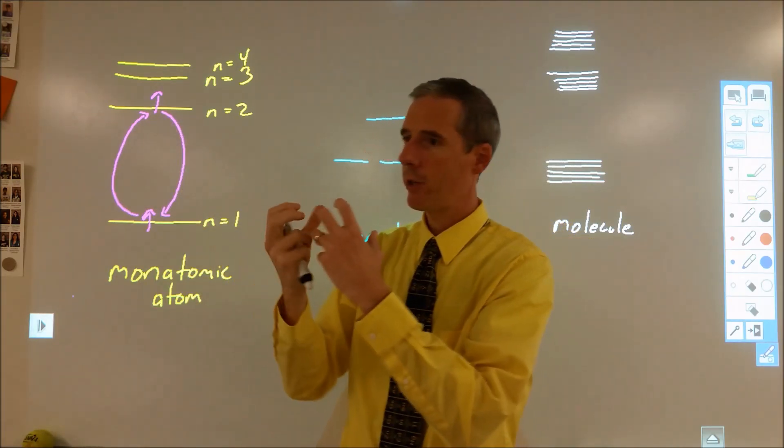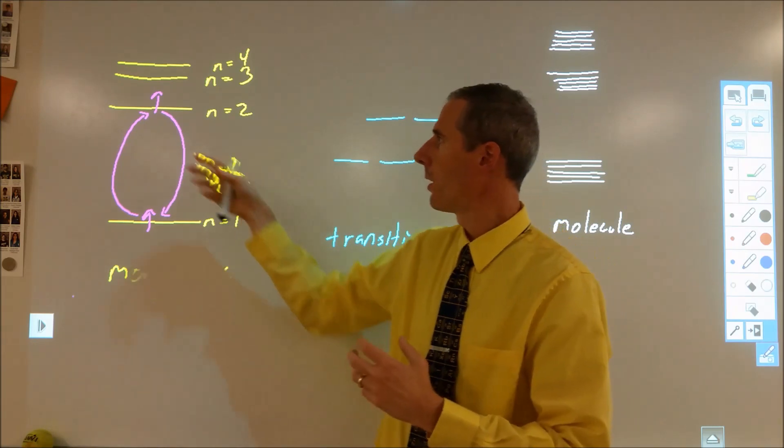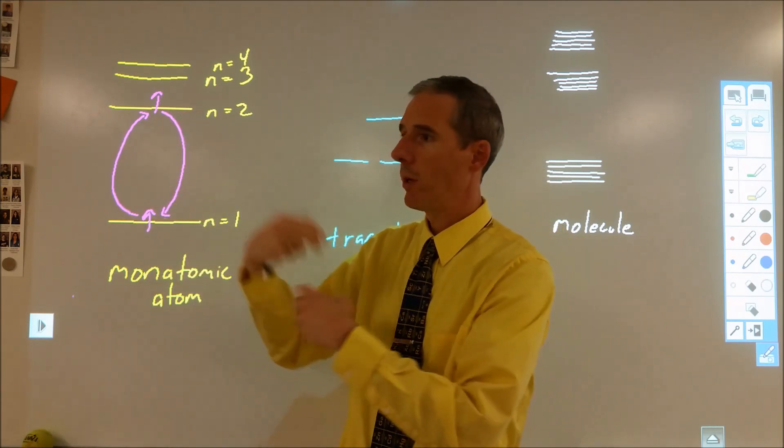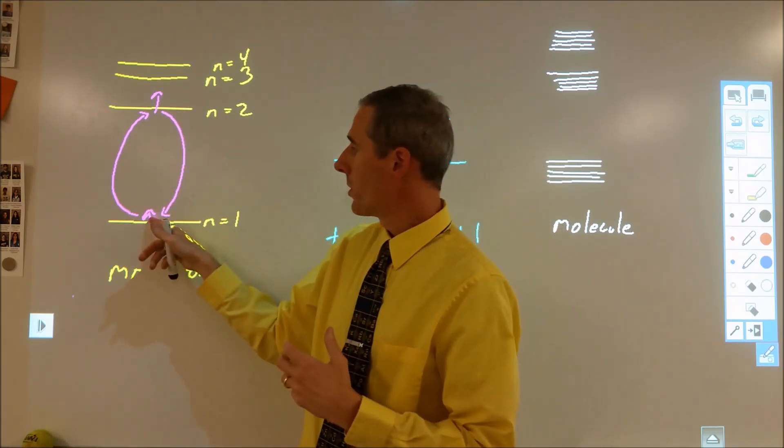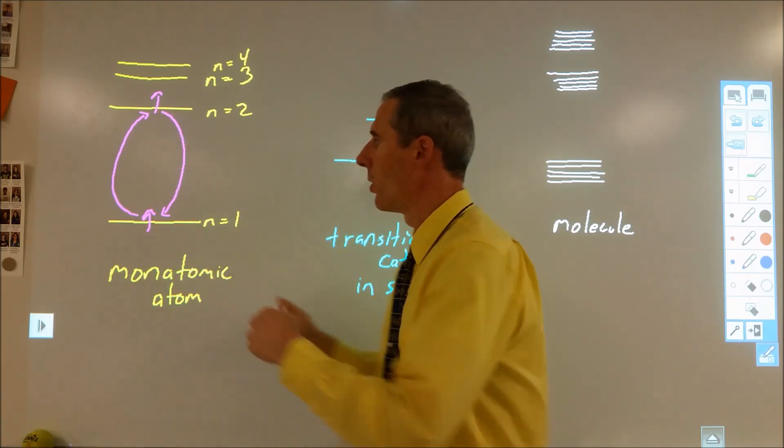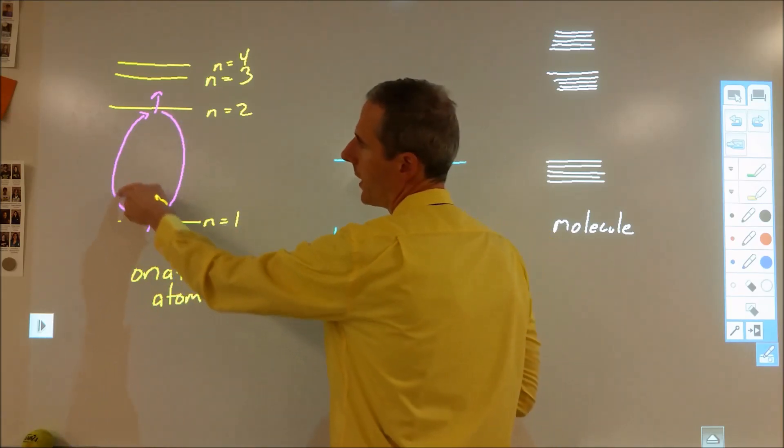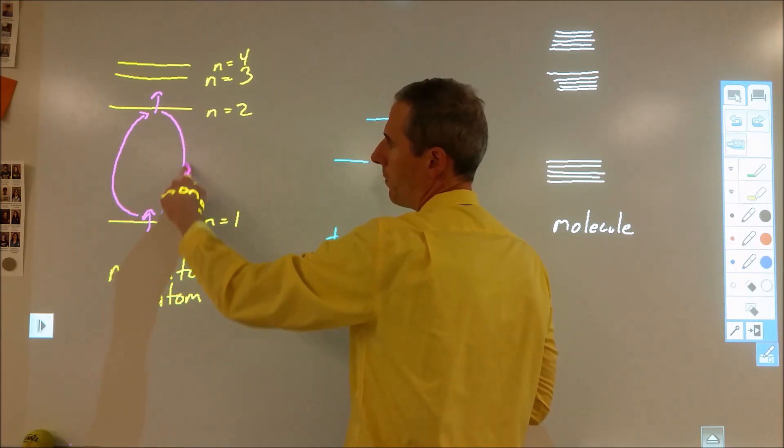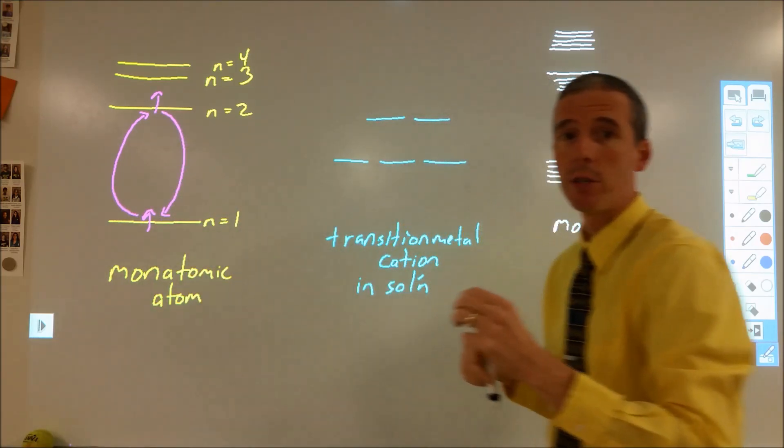When it goes from a lower to a higher energy state, light comes in, it gets absorbed, and now that light is part of that electron moving differently. When it changes back, it re-emits that light. Whatever gets absorbed gets re-emitted.